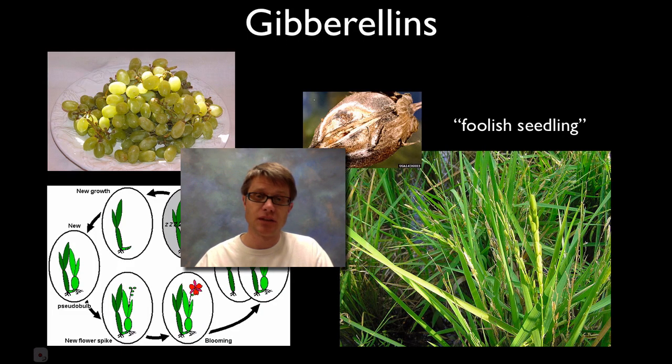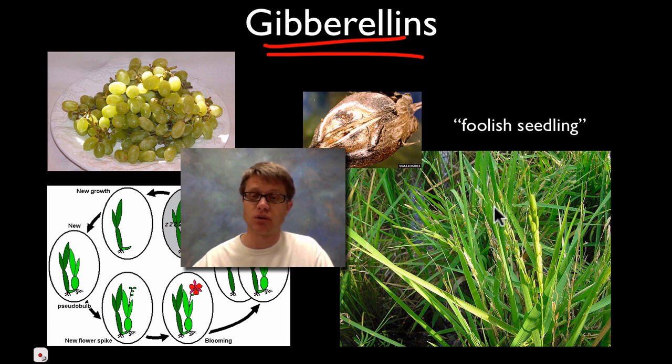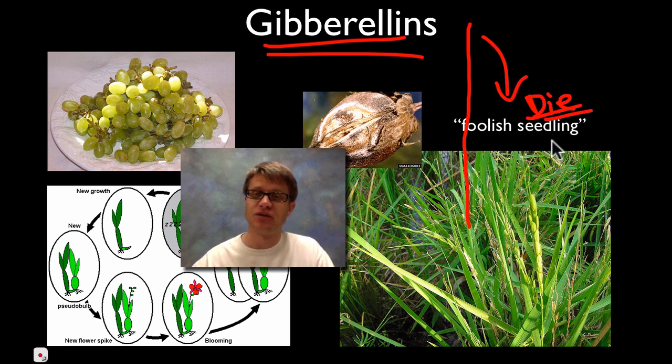Next thing we have is the gibberellins. Gibberellins actually comes from an old story. Basically we had rice growing in rice fields or rice paddies. And a fungus infected it, called gibberellins, a Japanese term. Basically what it did is it caused the rice to grow incredibly fast and then fall over and then die. Basically they called it foolish seedling, because all the rice would grow as quickly as it could, couldn't support its own weight, and then it would fold over on itself.